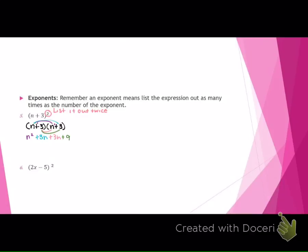Continue your distributing. 3 times n is 3n, and 3 times 3 is 9. So it's 3n plus 9. Justin, what's my final answer then? n squared plus 6n plus 9. Perfect.